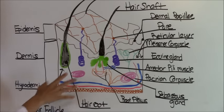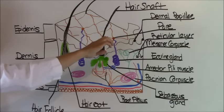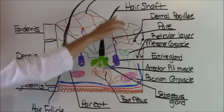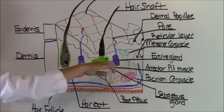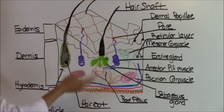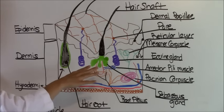Now onto the appendages of the skin. There are appendages, and they are the hair follicles, sebaceous glands, sweat glands, and of course the nails, but the nails are not shown in here. So those are the four different types of appendages of the skin.